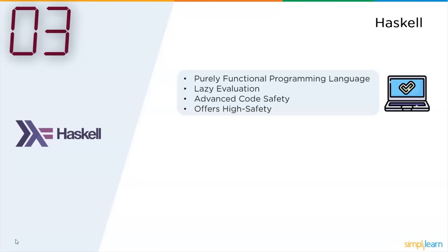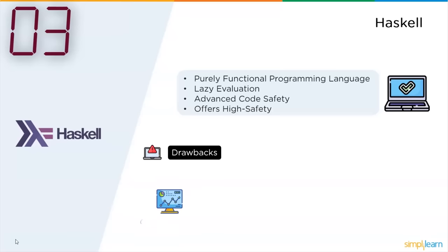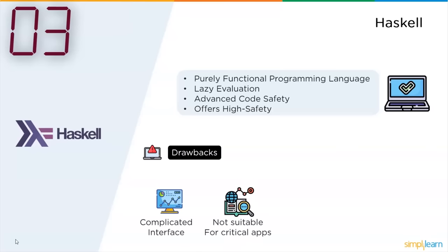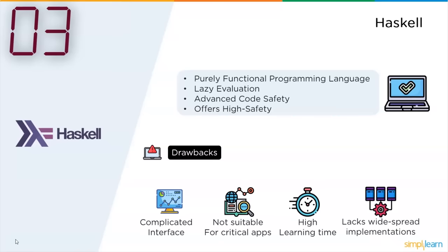Next, Haskell offered advanced code safety and a high level of safety to applications. The drawbacks which made it obsolete: it had a complicated interface and was not suitable for critical applications. It had a higher learning curve, was too tough to manage and learn in a short time, and it lacks widespread implementations.